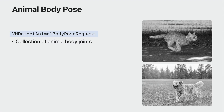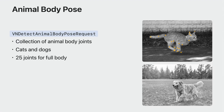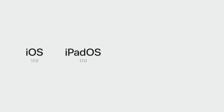Animal Body Pose is a new API in Vision, offered via the Detect Animal Body Pose request. Once processed, this request returns an observation for each animal which contains a collection of animal body joint locations. The request supports cats and dogs and detects 25 animal body landmarks that include the tail and ears. The animal body pose API is available in Vision starting in iOS 17, iPadOS 17, tvOS 17, and macOS Sonoma.